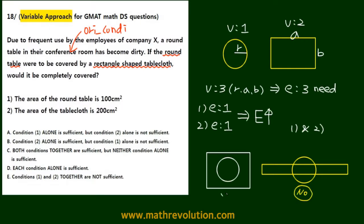We answer yes with the previous one. Since yes and no come out at the same time, it's insufficient and e is going to be our answer. Remember, this is the variable approach method.